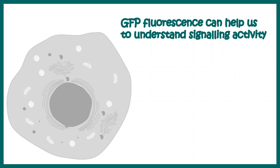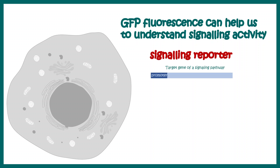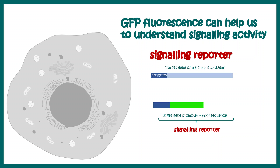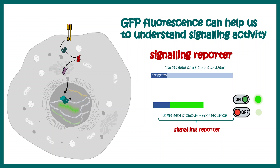Today, GFP-based fluorescence reporters can be used to understand cell signaling activity. For example, if we have a promoter for a target gene of a signaling pathway and we place the reporter gene underneath that promoter, we create a signaling reporter. Whenever the particular pathway is active, we see GFP fluorescence — indicating the pathway is on — and when we see little or no GFP fluorescence, that tells us the pathway is off. In this way, GFP becomes a readout of the on/off status of a signaling pathway, allowing us to track signaling dynamics in real time.